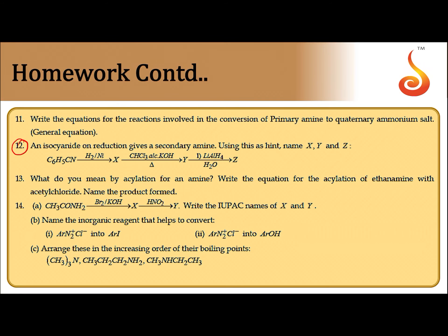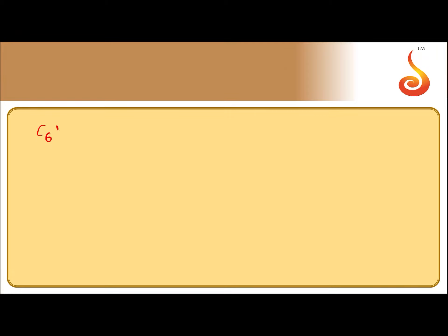An isocyanate on reduction gives a secondary amine — use this as a hint. Now let us see what is the reaction: C6H5CN.